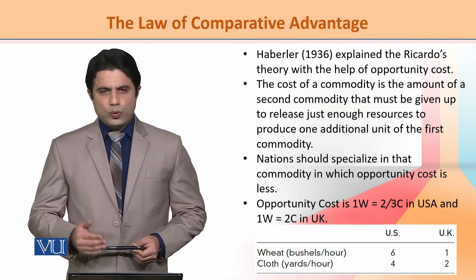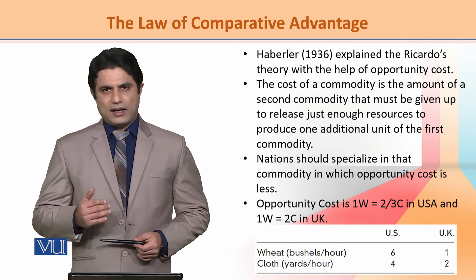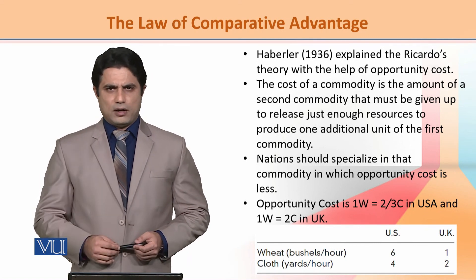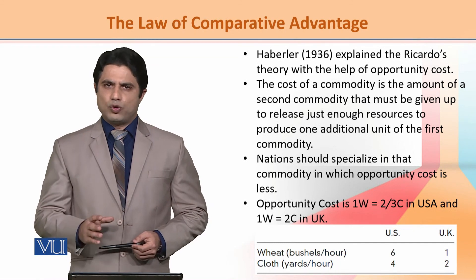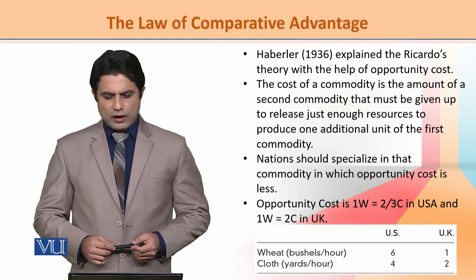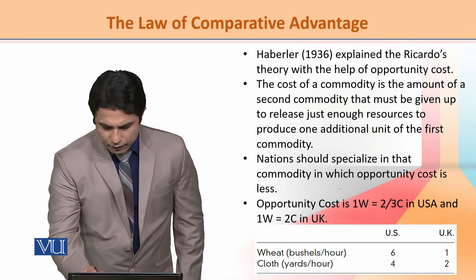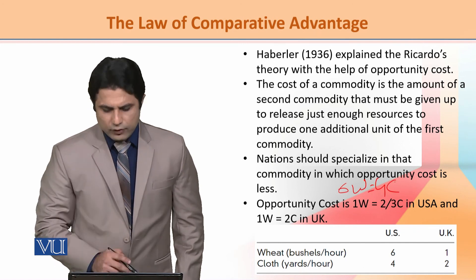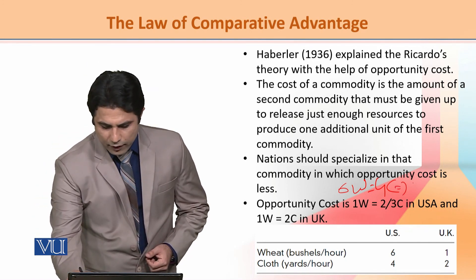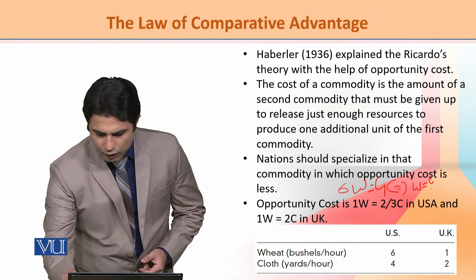If we study the case of the USA: suppose 6 wheat equals one hour of production, and 4 cloth. So the ratio is 4 over 6.